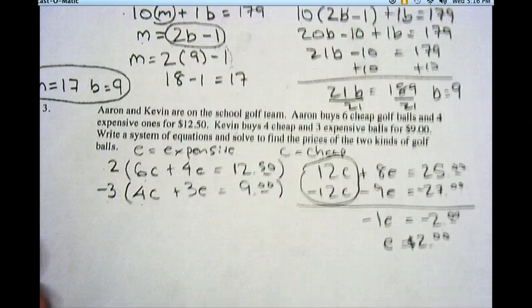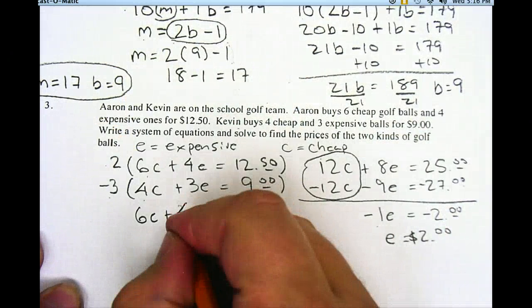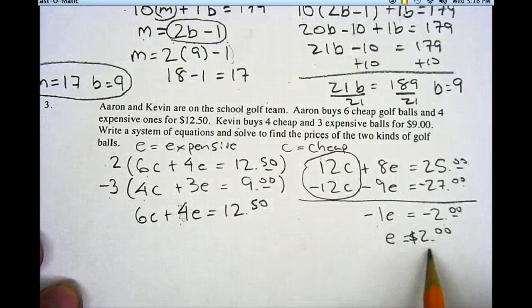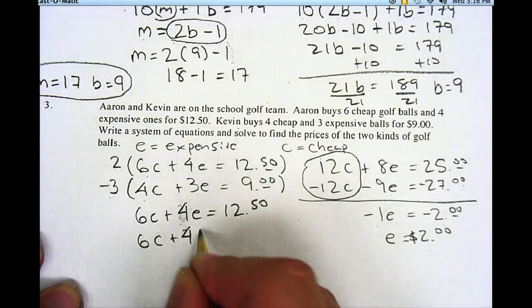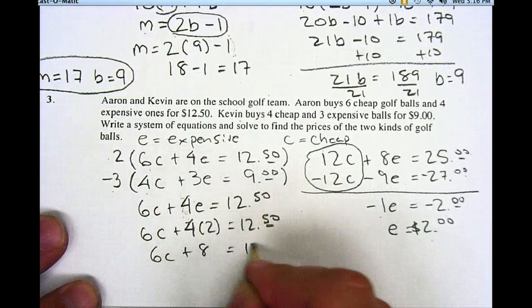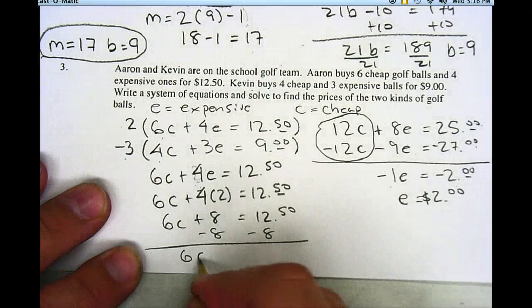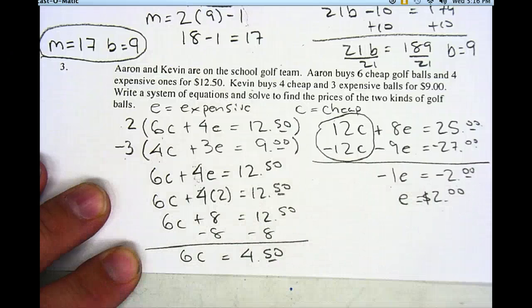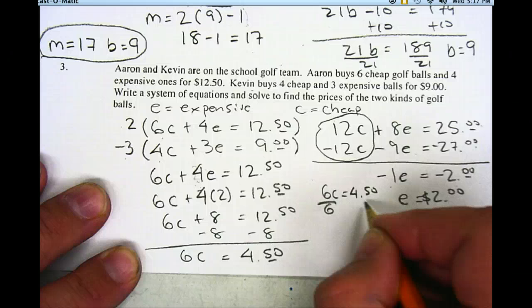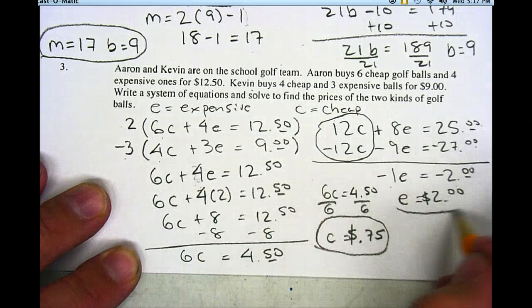So let's use the top equation, the original one I had here. I had 6C plus 4E is equal to $12.50. And I could have used either equation, I just picked the top one. And then if I put E as $2, I have 6C plus 4 times 2 is equal to $12.50. So I get 6C plus 8 equals $12.50. Subtract 8 from each side. I get 6C is equal to $4.50. Divide both sides by 6, and I get my cheap golf balls are $0.75.